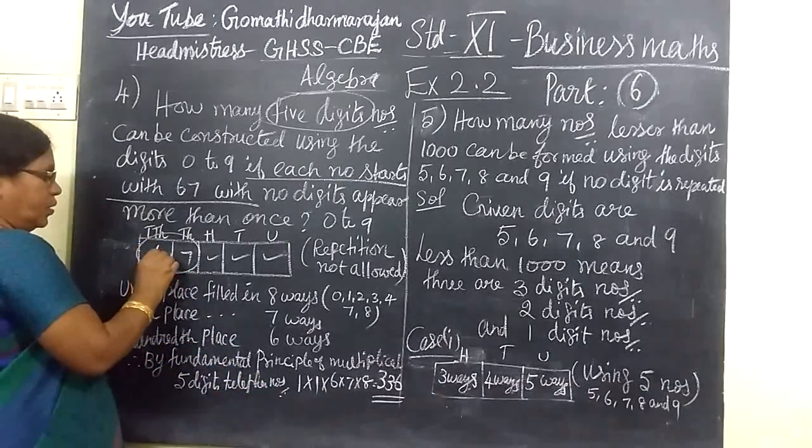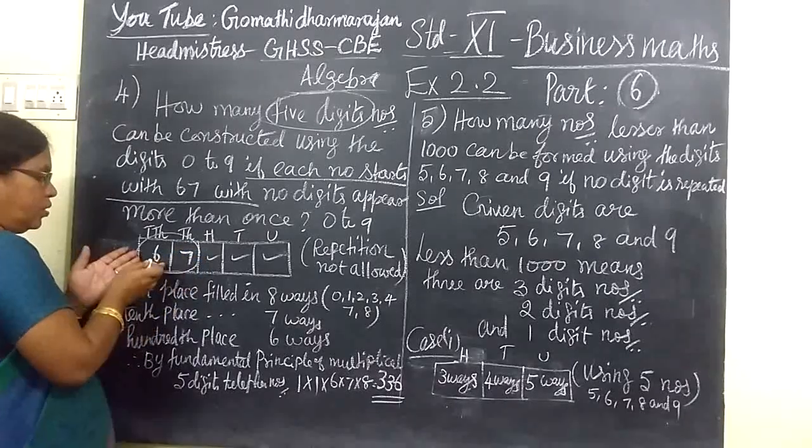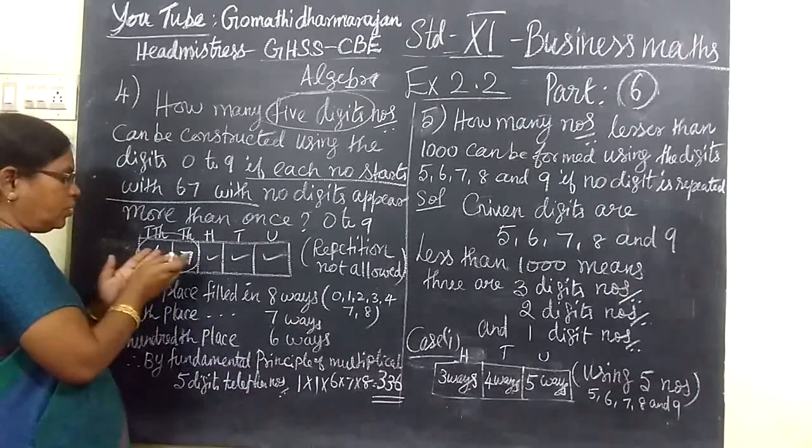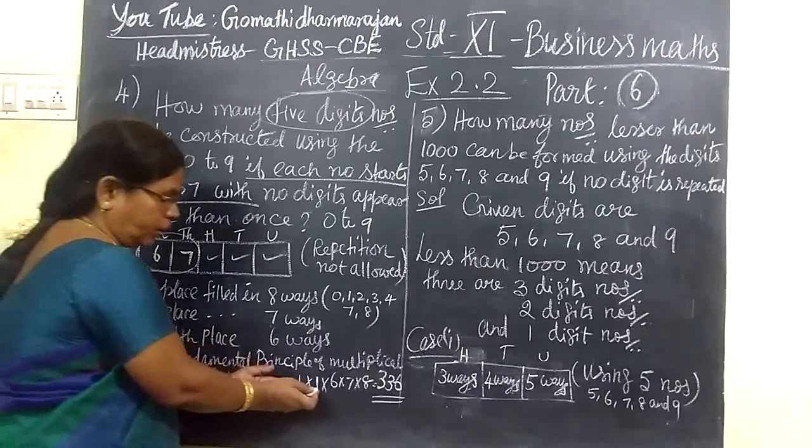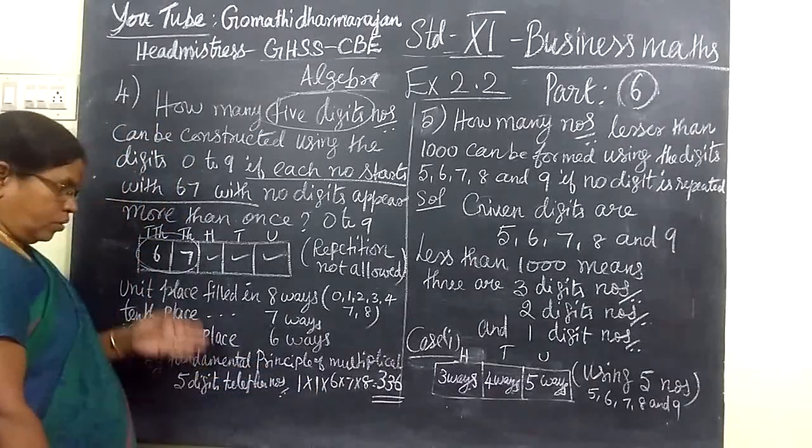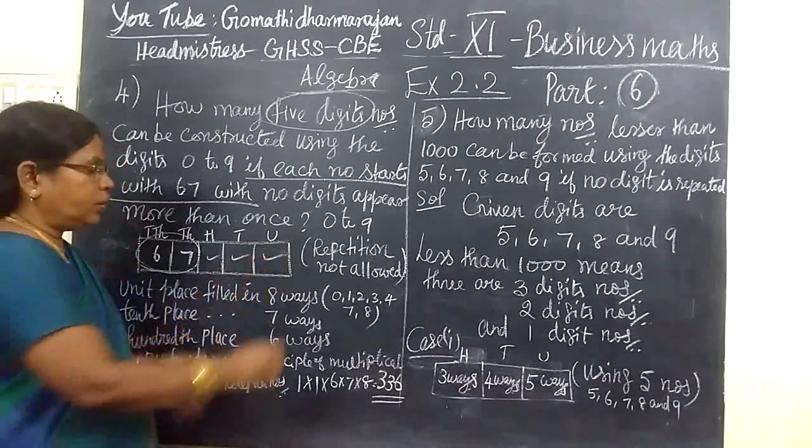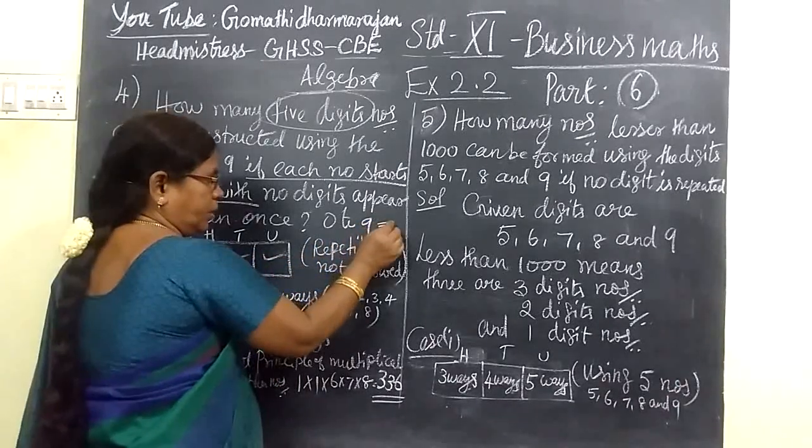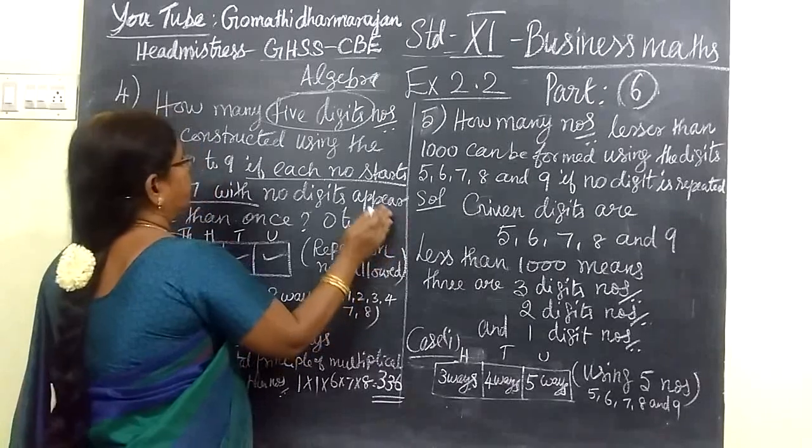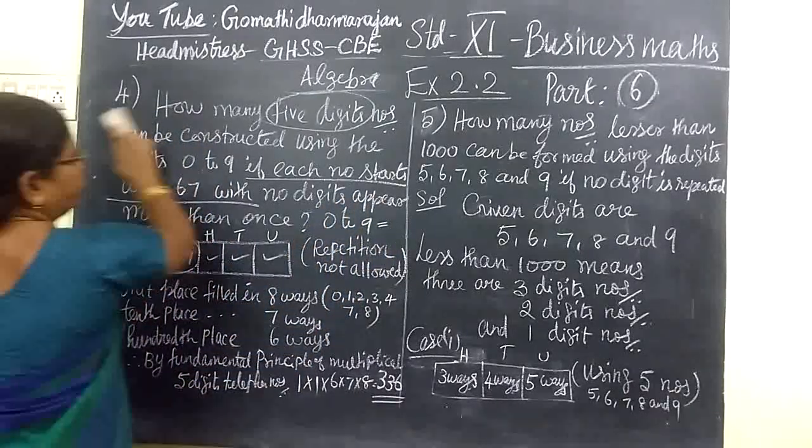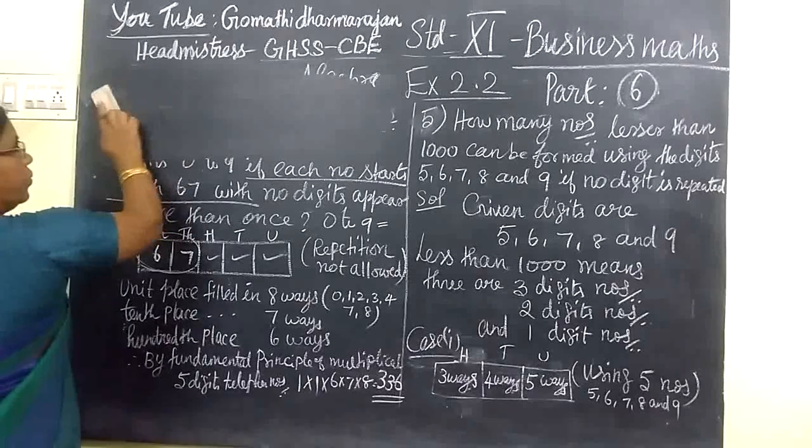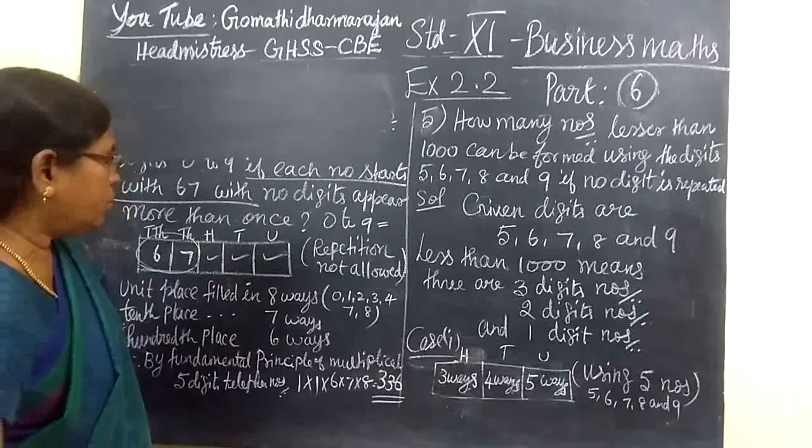Now, 67 is in the position, so this is filled in 1 way and this is also filled in 1 way. 1 into 1. So now consider unit place. Unit place will be - your method, total number is 0 to 9.